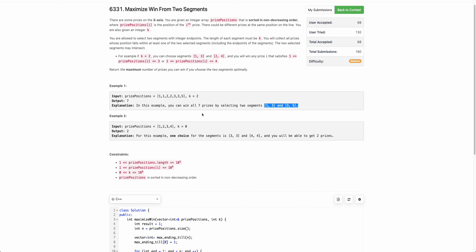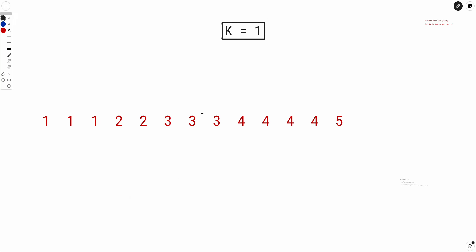Hope the problem statement is clear. Now how to solve this? Let's say k is 1. We have to select two ranges, each of length 1, and we have to select them such that the number of prizes captured is maximized.